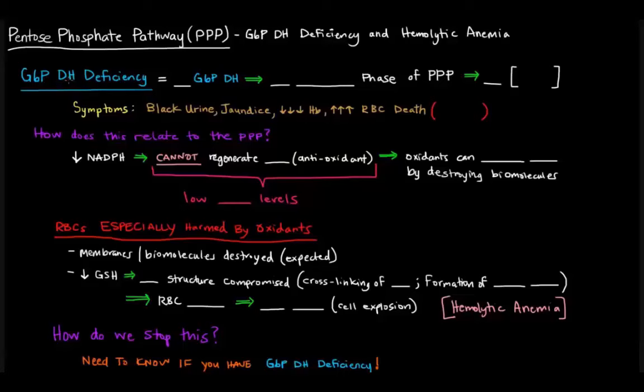Specifically glucose 6-phosphate dehydrogenase deficiency and hemolytic anemia and how they play a role here. So glucose 6-phosphate dehydrogenase deficiency is an X-linked disease, so it's a genetic disease, and basically what happens with this is that we have low levels of glucose 6-phosphate dehydrogenase.